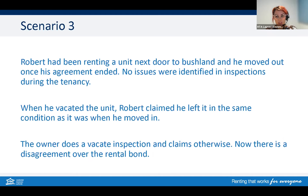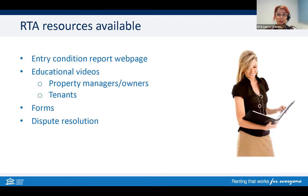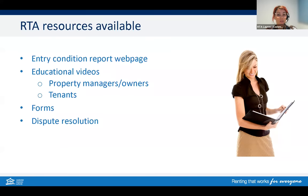Robert and the owner were able to resolve the issue between themselves. They agreed on a bond refund amount accounting for the wall scratches and dirty oven, but Robert was not liable for the garage as this happened after his tenancy responsibilities ended. Both parties were happy with the result. If they hadn't been able to self-resolve, they could have accessed the RTA's dispute resolution service, and if still unresolved, escalated to QCAT. Resources available include the entry condition report webpage, educational videos for both property managers/owners and tenants, and the RTA's dispute resolution service.